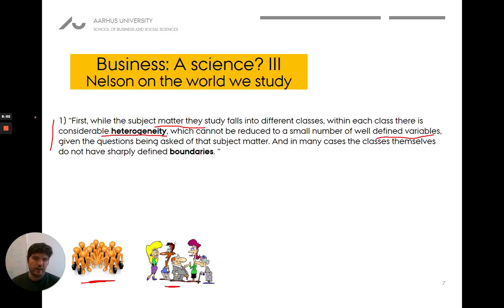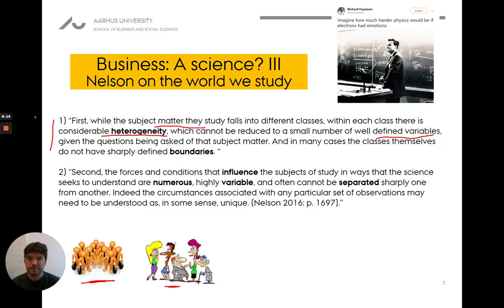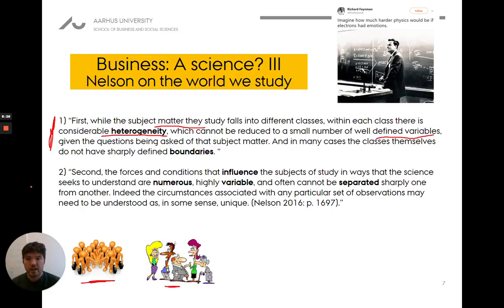We can't as easily define the concepts we're dealing with. What is an innovative company? What is a motivated human being? It's not that we can't say anything, but it's not like a hydrogen atom where we can completely draw it with perfect understanding. And the things that influence social science phenomena are numerous, highly variable, and often cannot be separated sharply from one another.